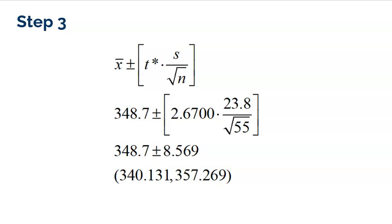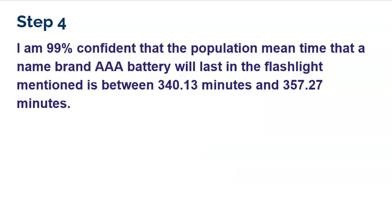Now don't forget the final step is to of course interpret that interval. I'm 99% confident that the population mean time that a name brand AAA battery will last in this flashlight mentioned is somewhere between 340.13 minutes and 357.27 minutes. Very simple.